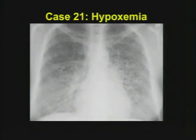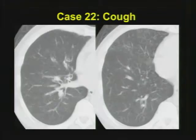Case twenty-one: a patient with hypoxemia. They have dyspnea and a dry cough. What's the abnormality? When would you use high-resolution CT or CT scan at all in a patient with this type of disease process? That's an important question to consider.